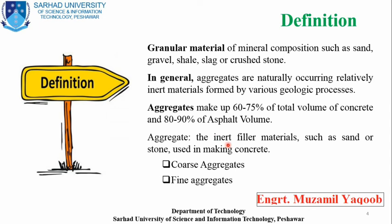Based on size, we have two main types of aggregates: the first is coarse aggregate, and the second is fine aggregate.